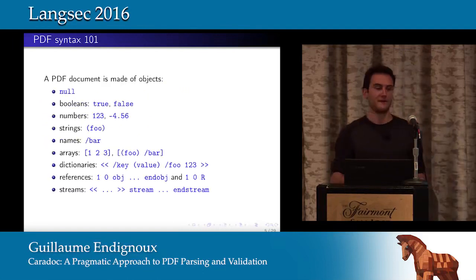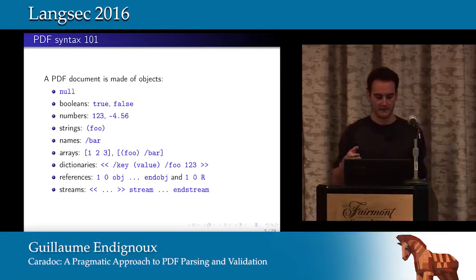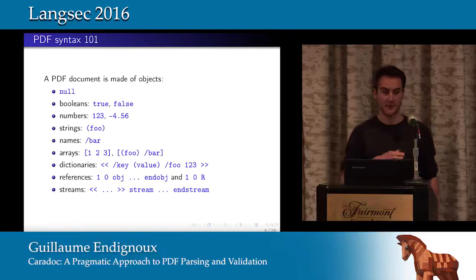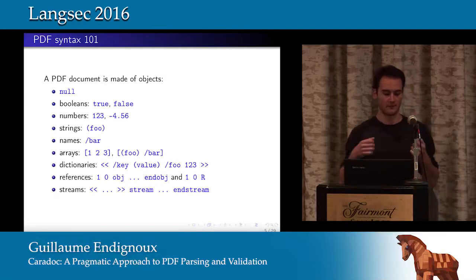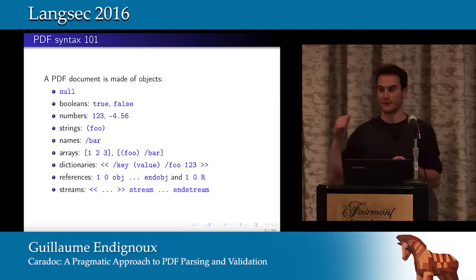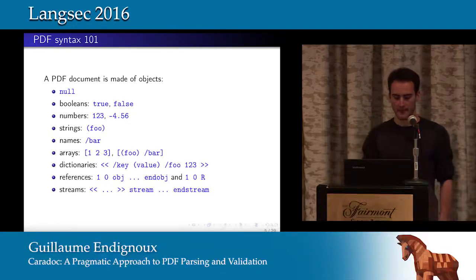A PDF file is written as a text-like format made of objects that describe the document: the null object, booleans, numbers, strings in parentheses, and names. We can build more complex objects such as arrays that can contain arbitrary objects and dictionaries that map keys to values. We can introduce references — giving a name to an object as a pair of two numbers, for example "1 0" — useful when a font is shared between several pages so you don't copy the same object multiple times.